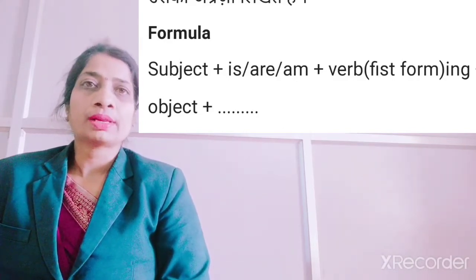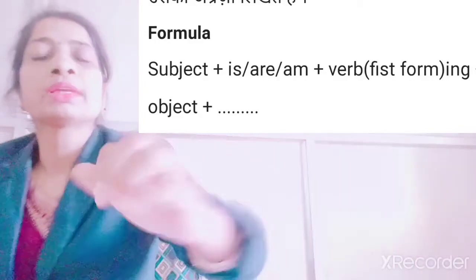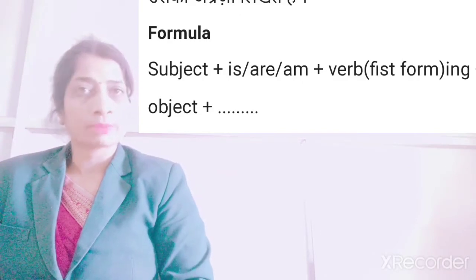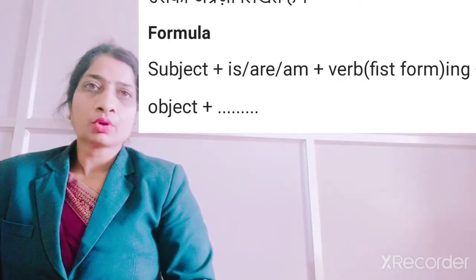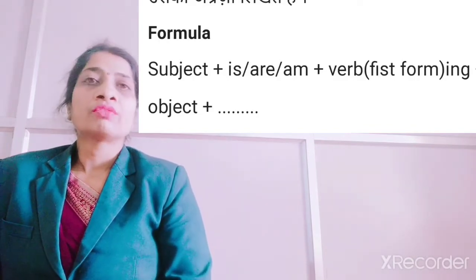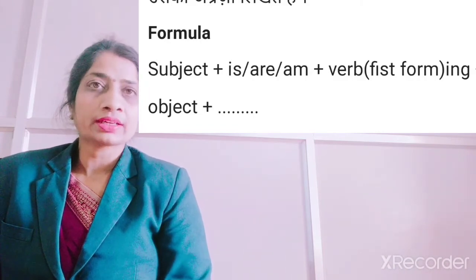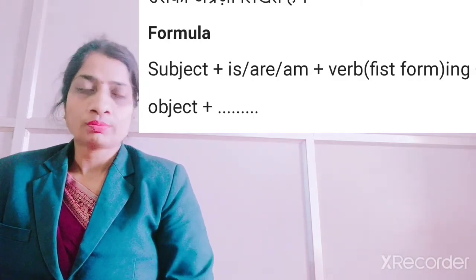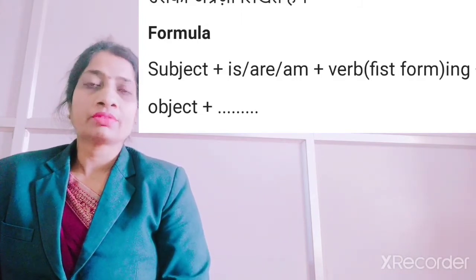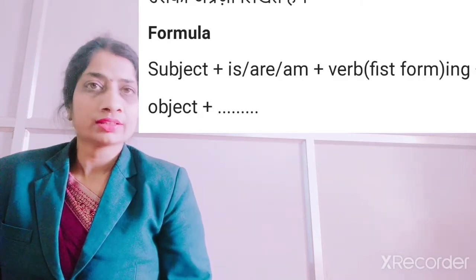That is the formula for present continuous tense. It means ki jab bhi aap present continuous tense mein koi sentence likhenge, us mein subject pehle aayega. And depending upon the subject, you have to use is/am/are plus verb — jo bhi verb aap likhenge, us mein aap ing add karenge, aur phir uske baad object hoga. Wherever you see the word continuous, verb mein aapko ing add karni hai.